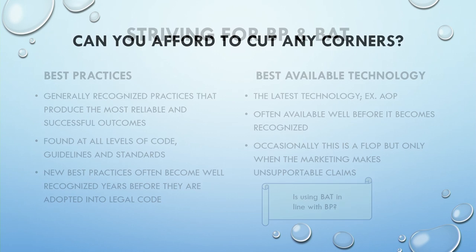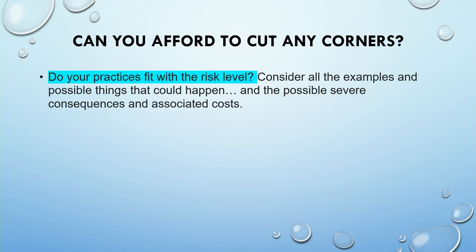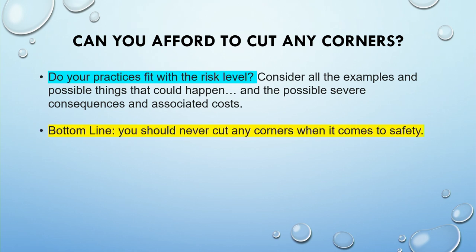Can you afford to cut any corners? You need to ask yourself: do your practices fit with the risk levels I'm describing? Consider the possible severe consequences — both monetary and non-monetary costs — including your center's reputation if a major incident occurs. The bottom line is that you should never cut corners when it comes to safety. What do best practices look like for your center? Are you being as safe as you can be? Are you compliant? How effective is your training?